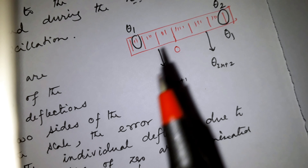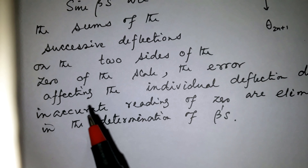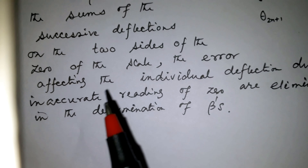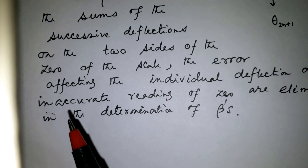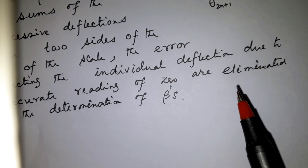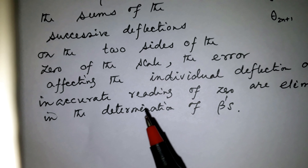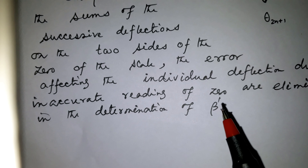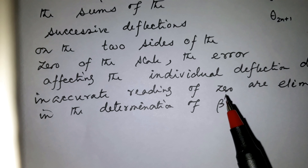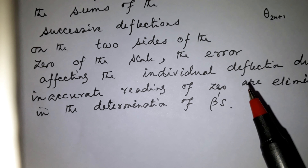The errors affecting the individual deflections due to inaccurate reading of the zero are eliminated in the determination of betas. So this procedure is followed in determining the log decrement.